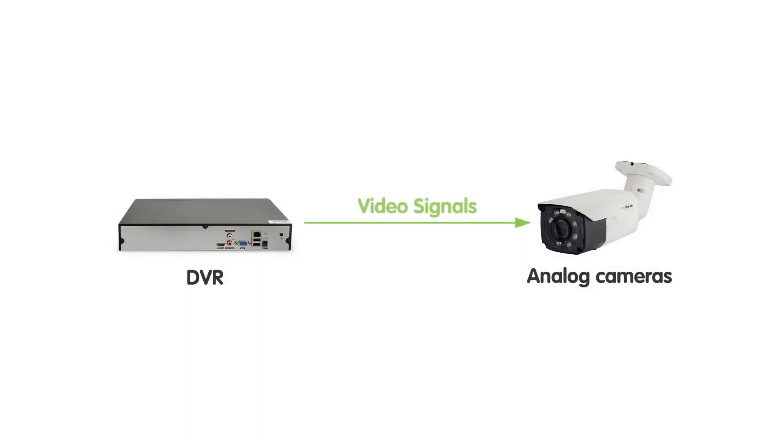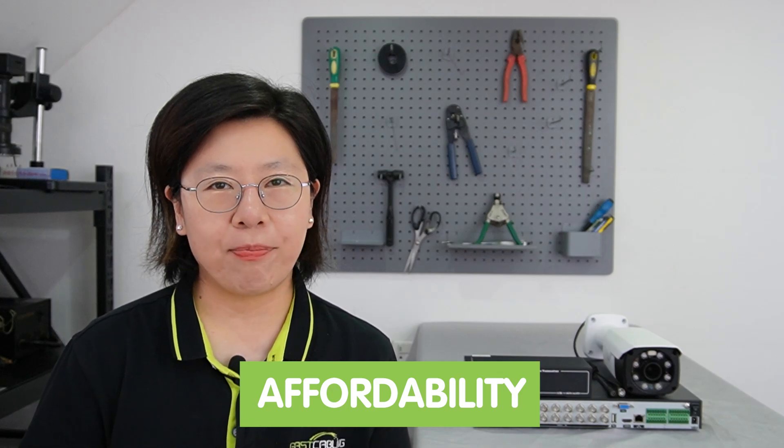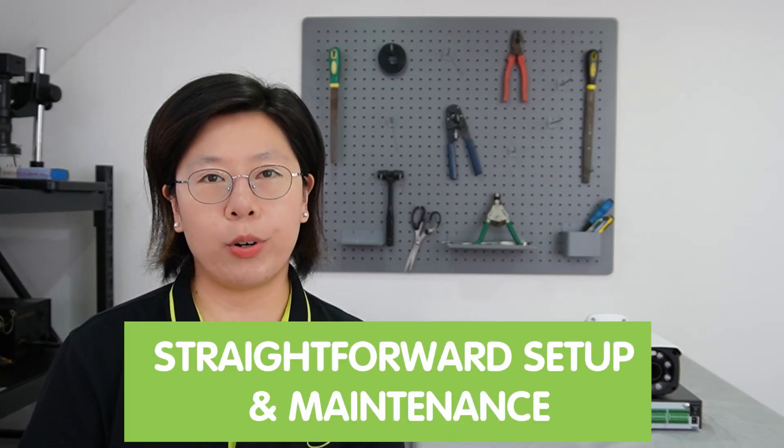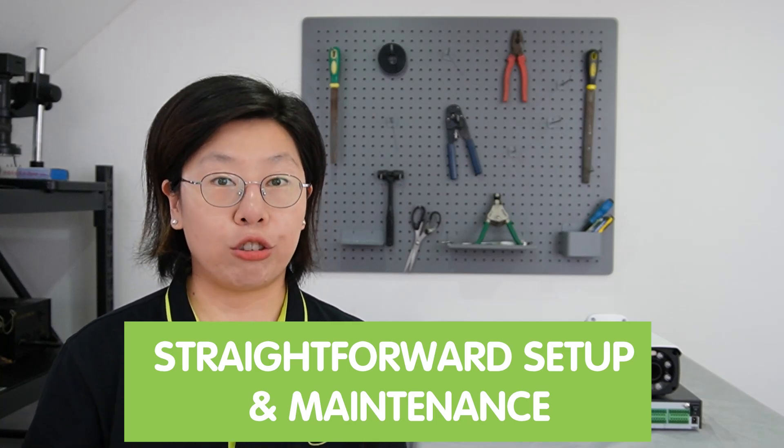Analog cameras are the foundation of many security systems. They operate by capturing video signals and transmitting them over coaxial cable to a digital video recorder, a DVR. Their simplicity lies in their fundamental design — they capture and send footage without complex digital processing. One of their standout features is affordability. Analog systems are generally more budget-friendly, both in terms of camera cost and infrastructure, making them an attractive choice for cost-effective security solutions.